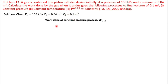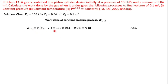Work done at constant pressure process W1: the constant pressure process formula is P into (V2 - V1), so W1 = P1 * (V2 - V1). Pressure is constant so P1 equals P2. This gives 9 kJ of work done during the constant pressure process.